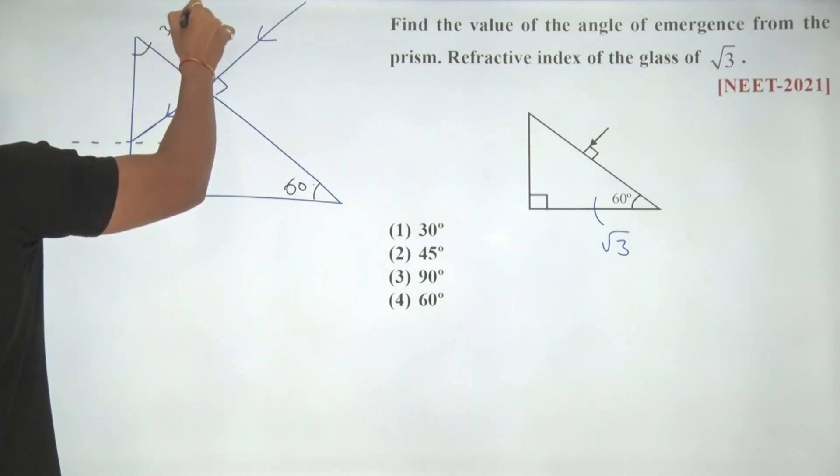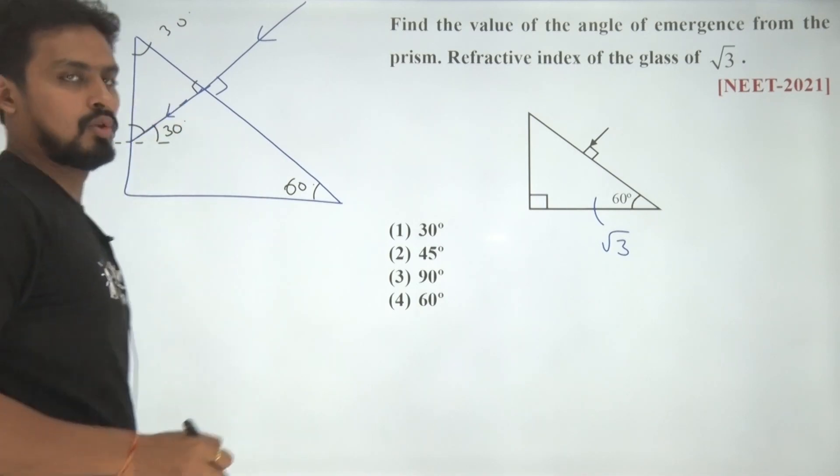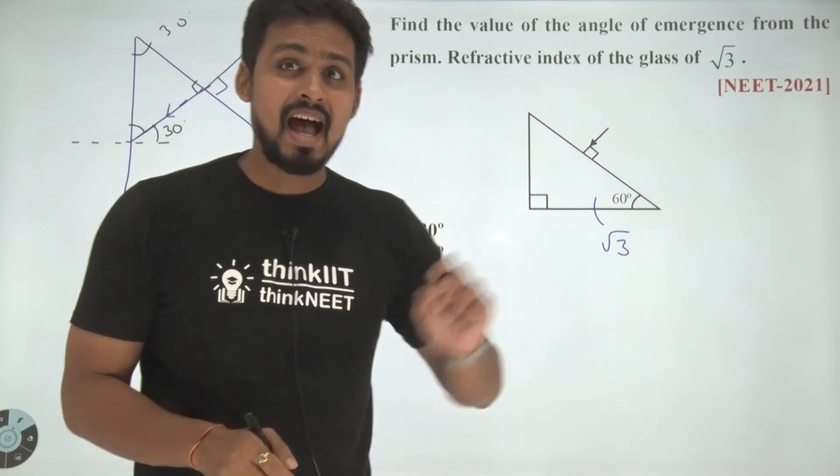The ray would be coming in this direction. Since this angle is given as 60 degree, I can say this angle would be 30 degree, this is 90, therefore this would be 60 and this would be 30 degree.